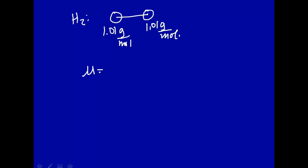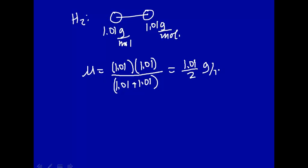The reduced mass for H2 will be m1, which is 1.01 gram per mole, times 1.01 gram per mole, divided by 1.01 plus 1.01, all in gram per mole. And this is just 1.01 divided by 2 gram per mole. So that's the reduced mass, if you have a homonuclear diatomic molecule, the reduced mass is just the average or half of these masses.